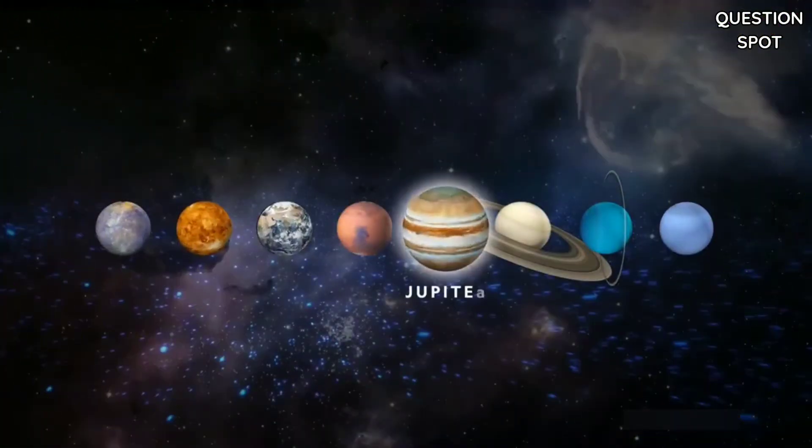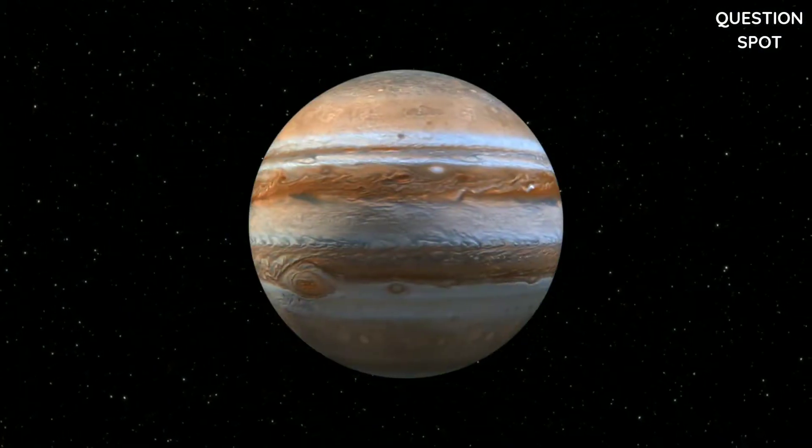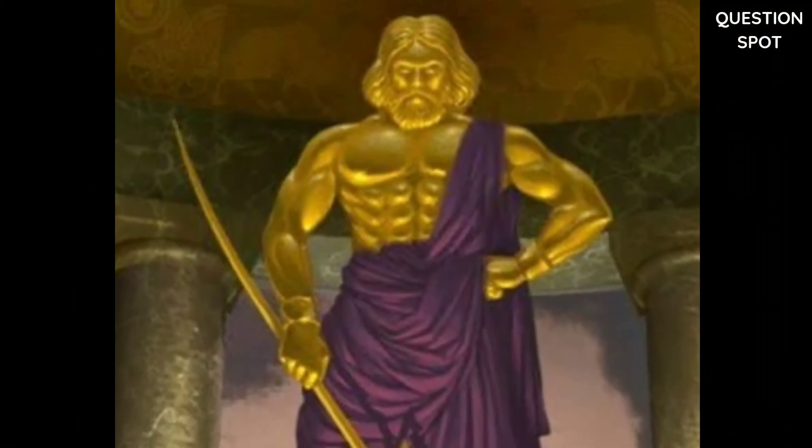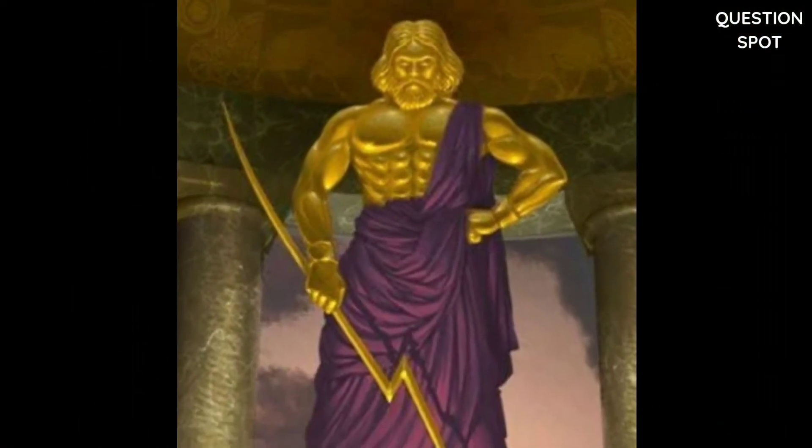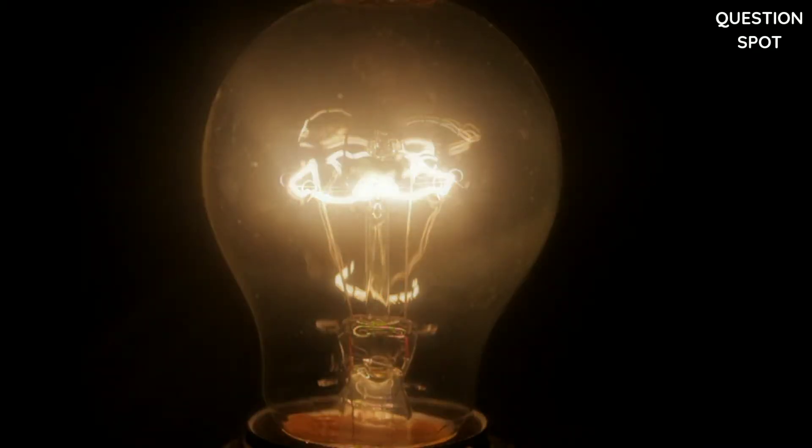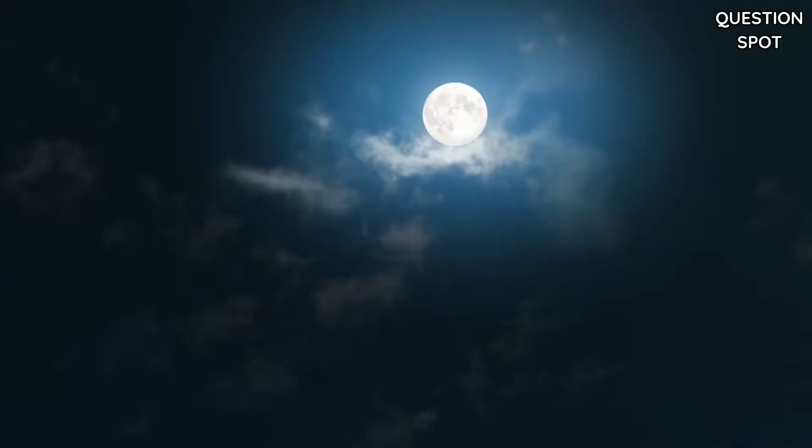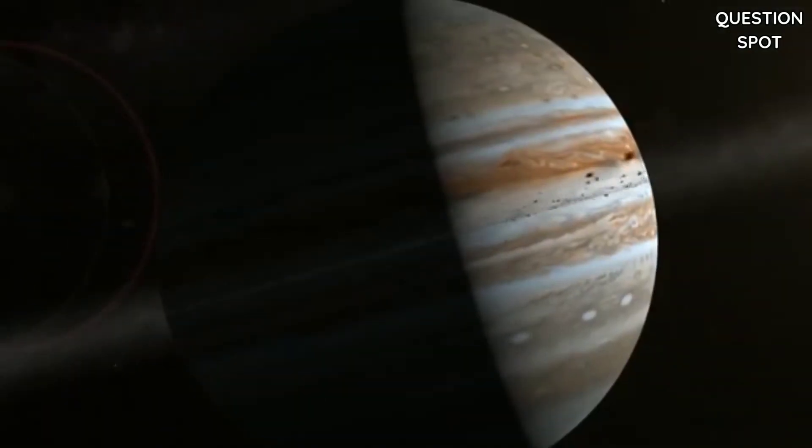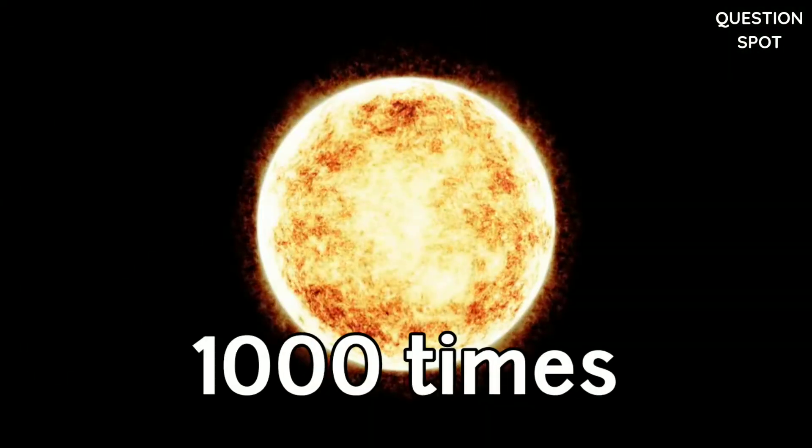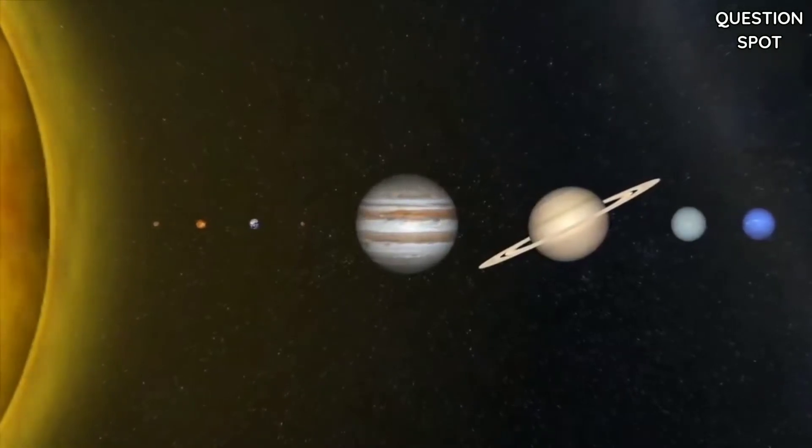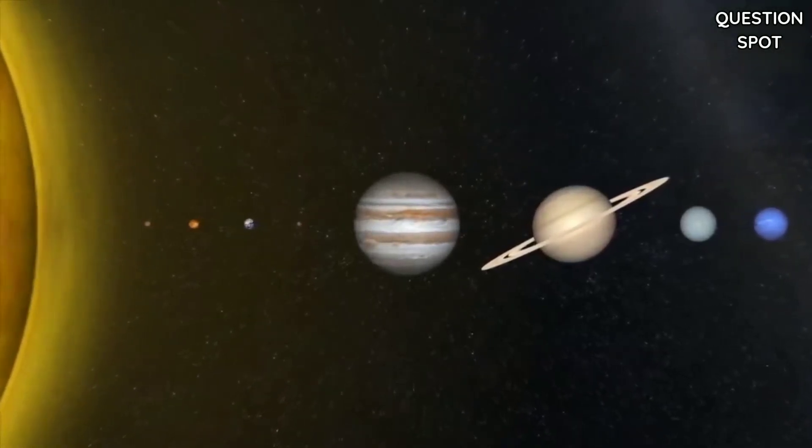Jupiter is the fifth planet from the sun and the largest of all in the solar system. Jupiter is named after the Roman god Jupiter, the god of thunder and the sky and king of the gods. It is the third brightest object in the sky after the moon and Venus. It is a giant planet with a mass one-thousandth that of the sun, but two and a half times that of all the other planets in the solar system combined.